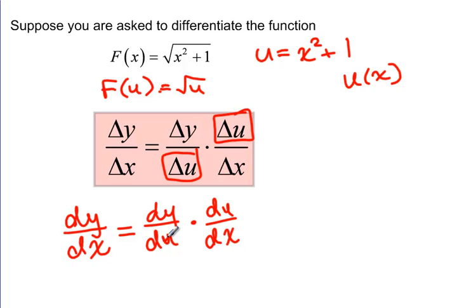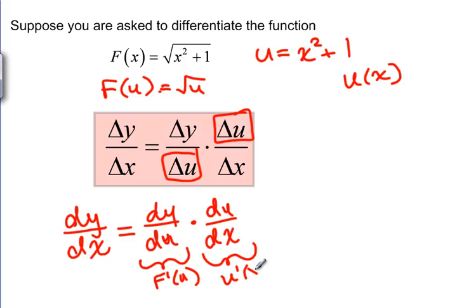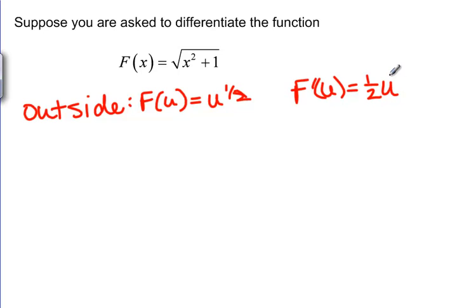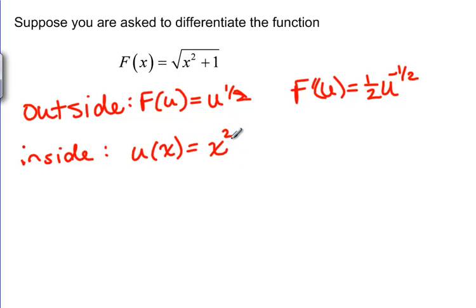How does it work? Well, to do this we're going to need to know F prime of U and we're going to need to know U prime of X. Our outside function is F of U equals U to the 1/2, so F prime of U is 1/2 U to the negative 1/2. Our inside function is U of X equals X squared plus 1, and U prime of X equals 2X.